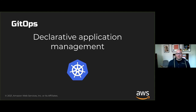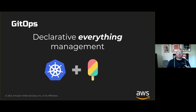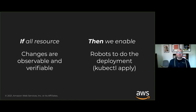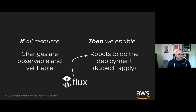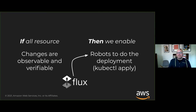If all resource changes are verifiable and observable, then we enable robots to do the deployment of those configuration changes out into a target environment — whether that target environment is a Kubernetes cluster, AWS cloud, Google Cloud, or Azure. FluxCD is the canonical GitOps robot, doing a kubectl apply — automating the process of applying the manifests stored in a Git repository, and in doing so, actuating those desired state changes out into production.